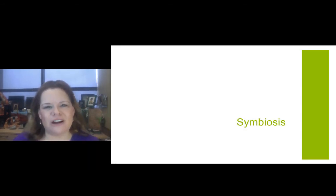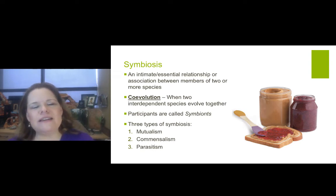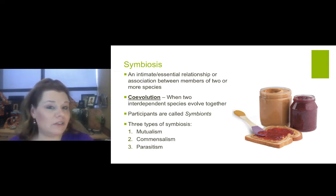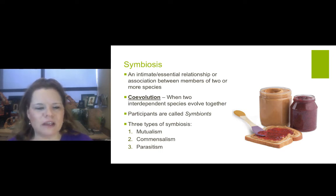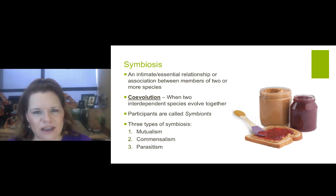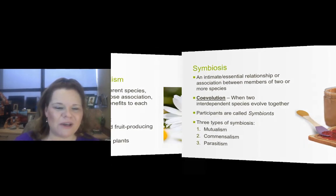Symbiosis — an intimate and essential relationship or association between members of two or more species. They have and give something to each other. They're symbiotic. Co-evolution is when two interdependent species evolve together — participants are called symbionts. There are three types of symbiosis: mutualism, commensalism, and parasitism. What's up with the peanut butter and jelly? Are you really going to have a jelly sandwich without peanut butter? That's a symbiotic relationship in its own way.